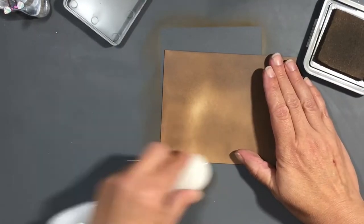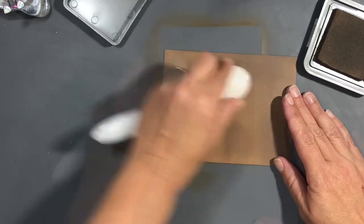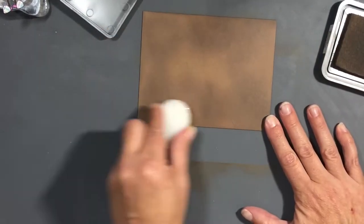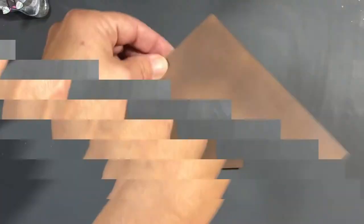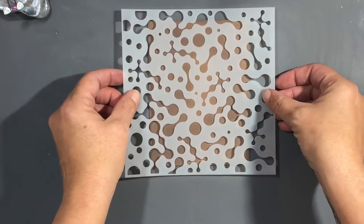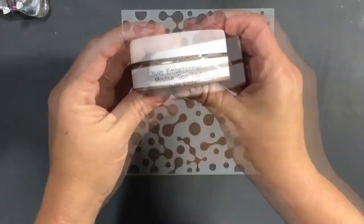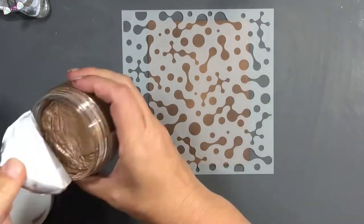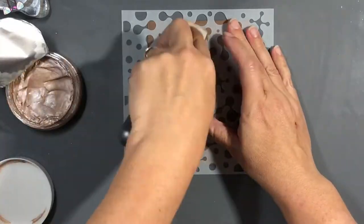We're gonna do some quick ink blending here with some Ground Espresso Distress Oxide ink, and then I'm making sure it's nice and dry because I don't want any of that color to mix with my embellishment mousse.